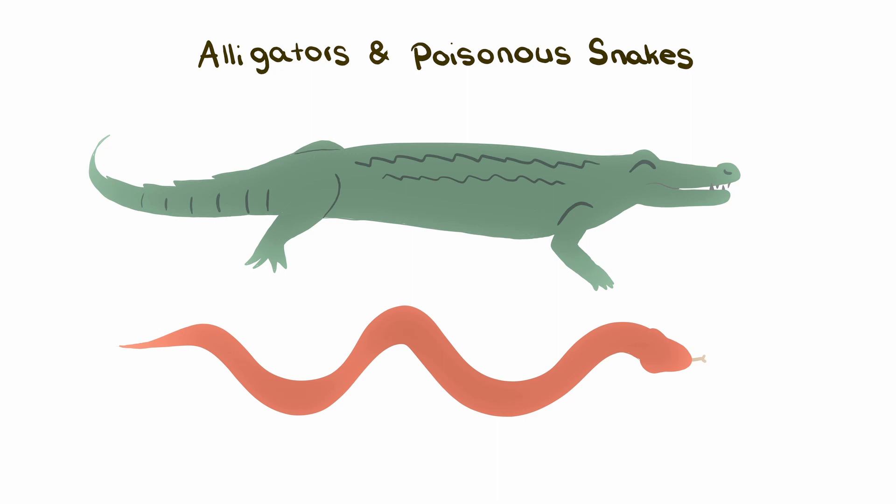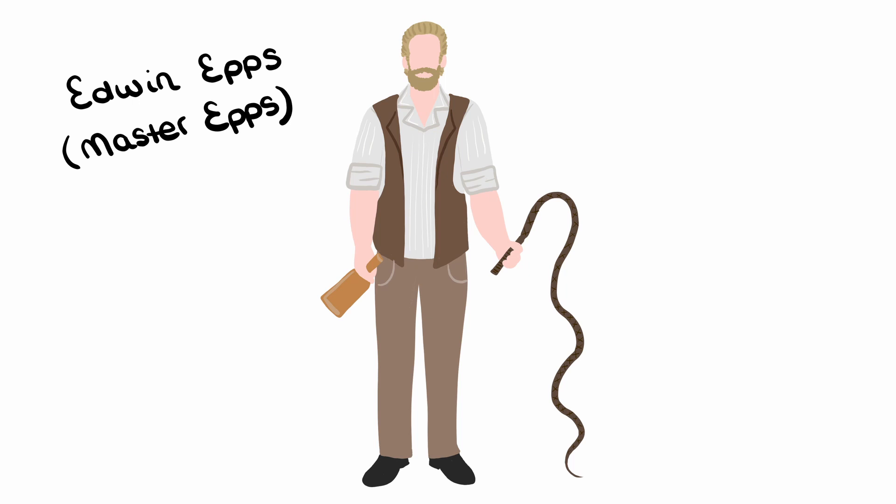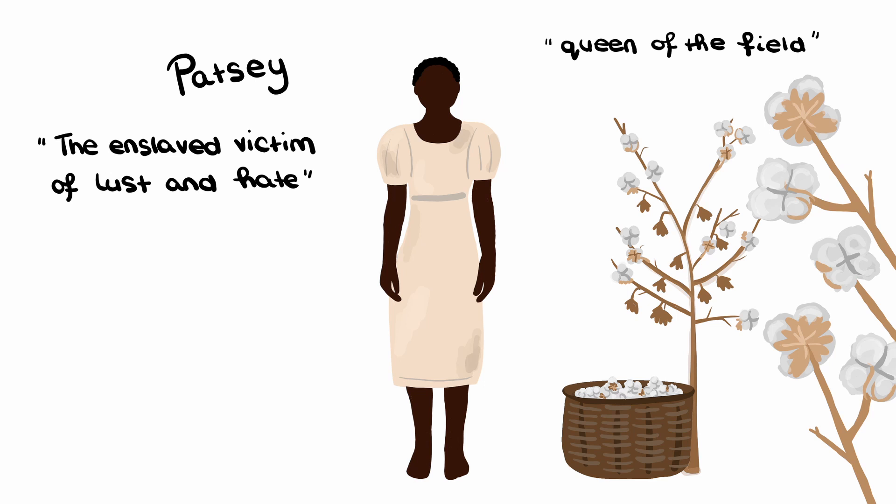Solomon ends up at Ford's house and gets to stay there for the time being. He is then sold to Master Edwin Epps, a horrible plantation owner who treats his slaves in the worst way possible. Solomon spends the majority of his enslaved years with Master Epps. Patsy is the best cotton picker on Master Epps' plantation, but also the victim of the most abuse there.